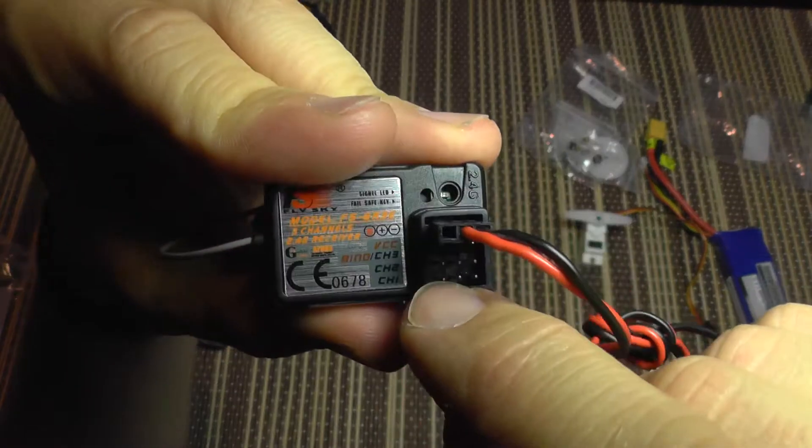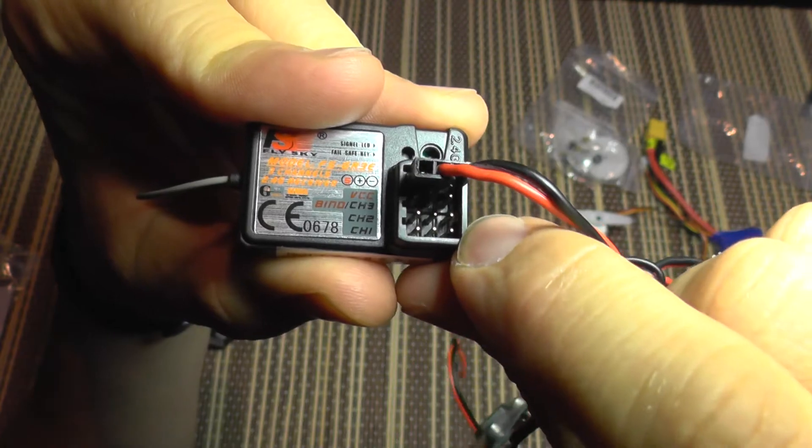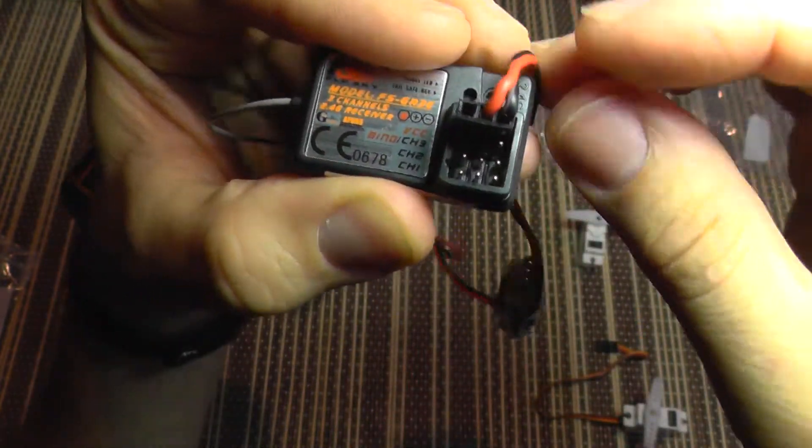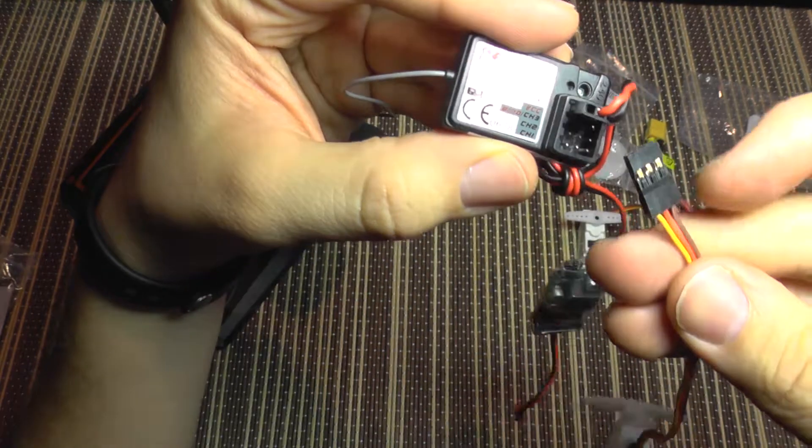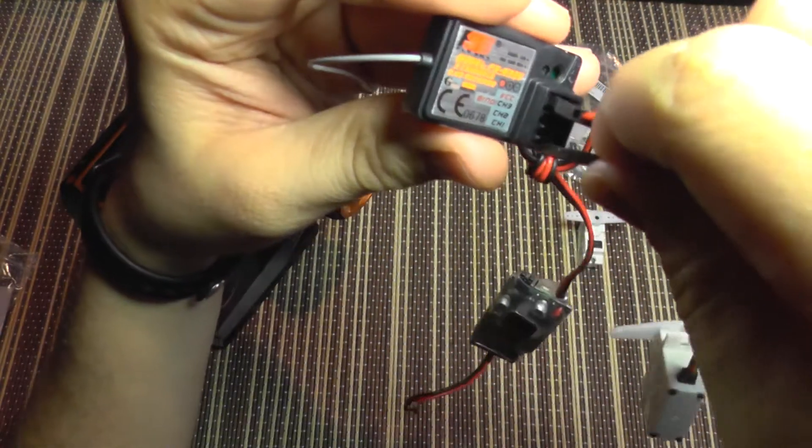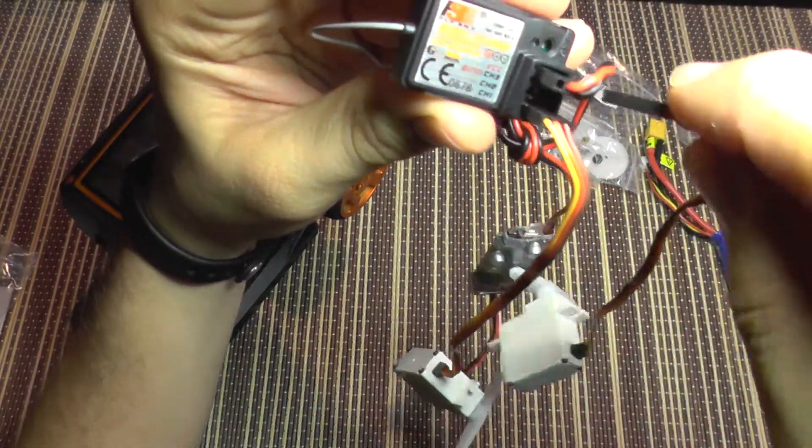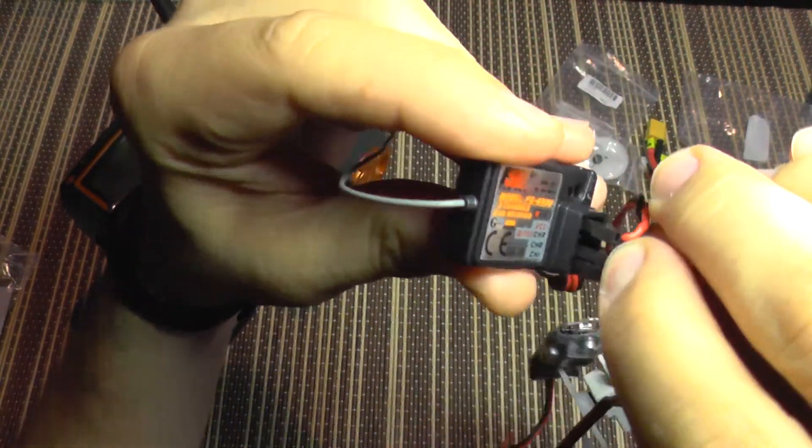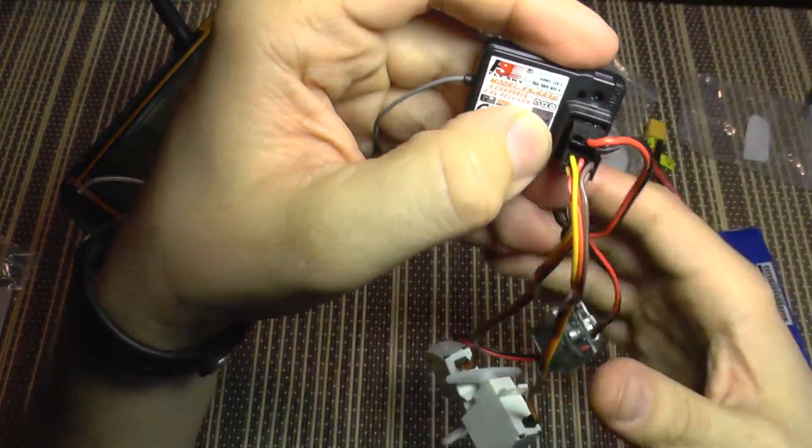And now I'm going to use the servos and connect them in channel 1 and channel 3, which should be throttle and steering. And now they are inserted.